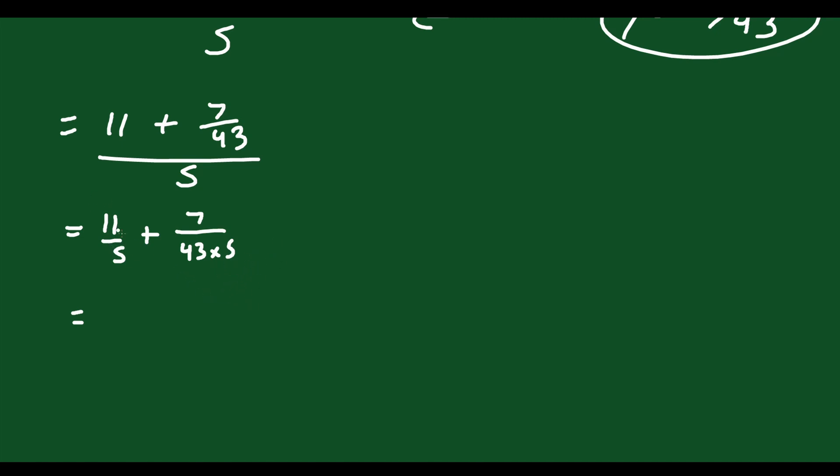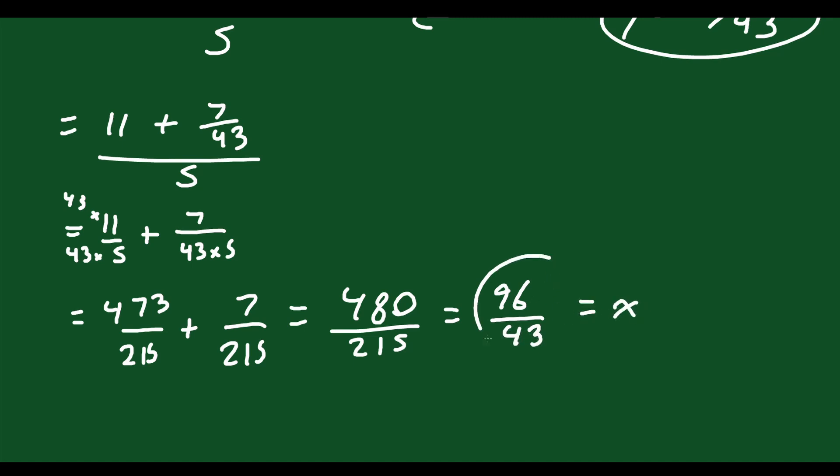I'll multiply this here by 43 on the top and bottom, so there's a common denominator. So times 43 on the bottom times 43 on the top. And what you're going to get is 473 over 215 plus 7 over 215. That equals 480 over 215, which reduces to 96 over 43. That's your simplified answer for x. You didn't have to do it this way, right? You could have simplified it in a different way, however you were comfortable with.